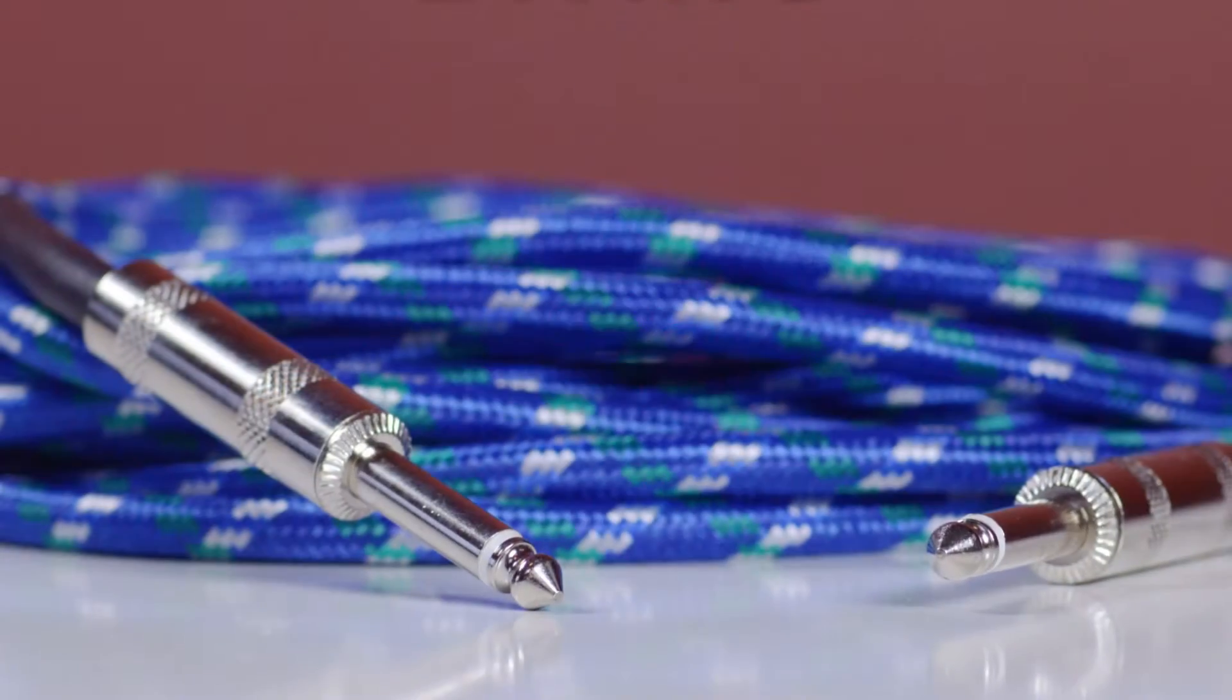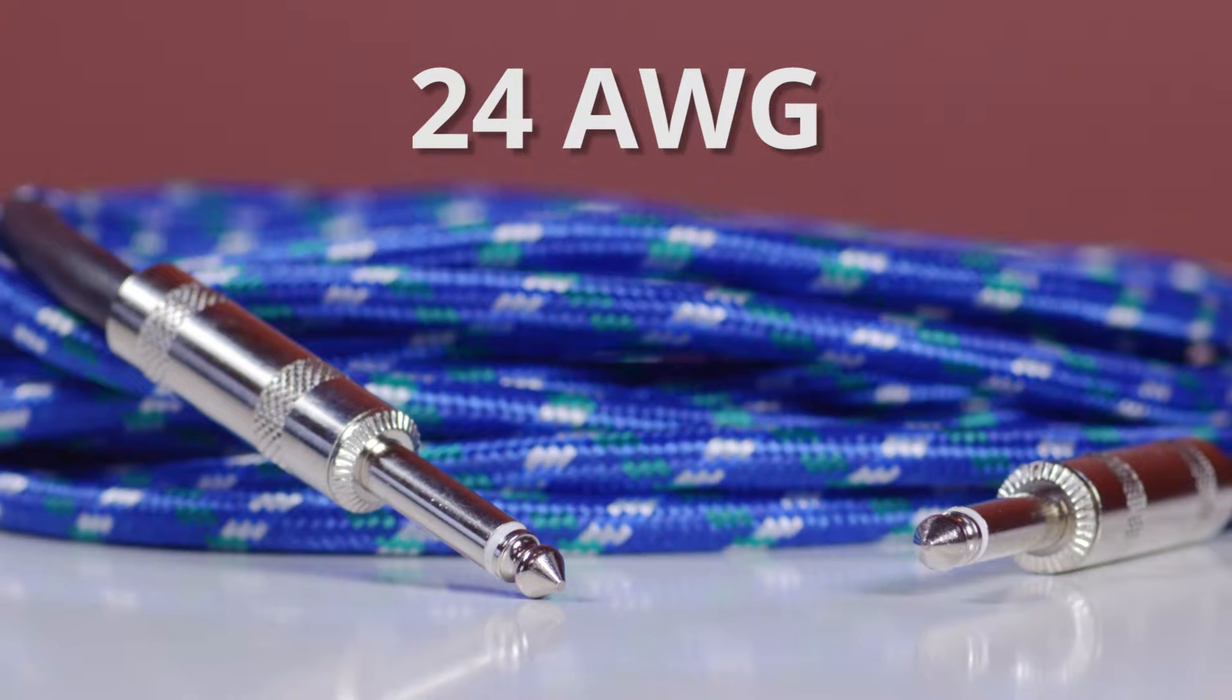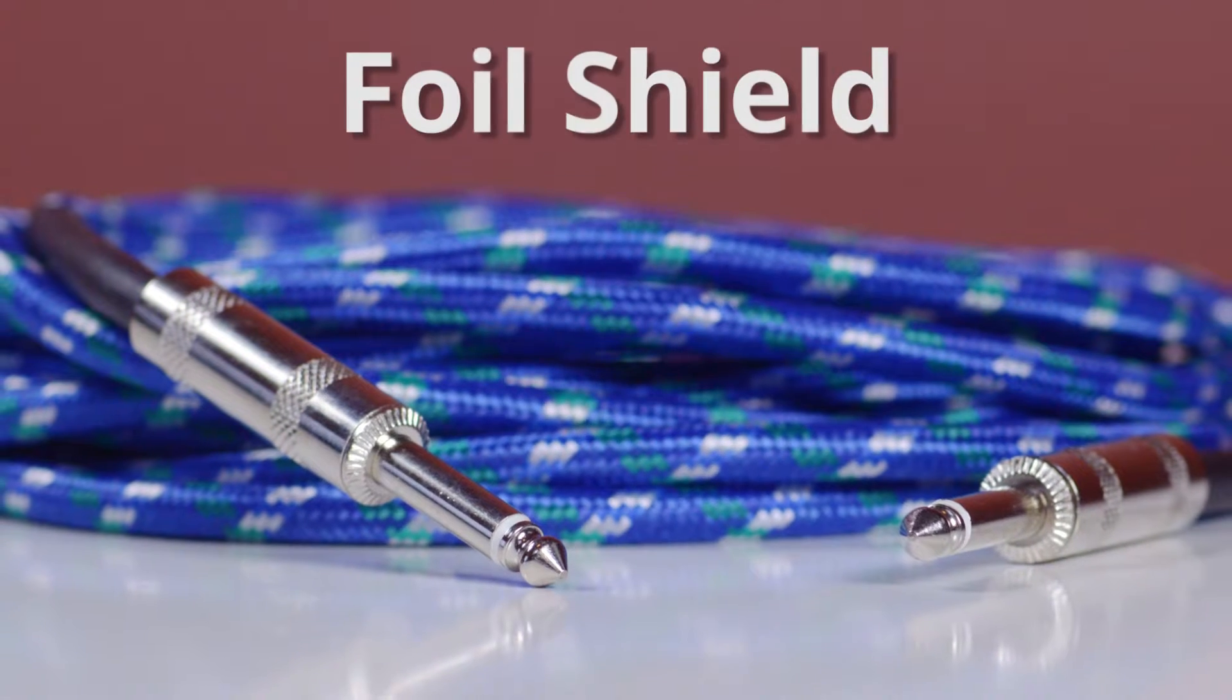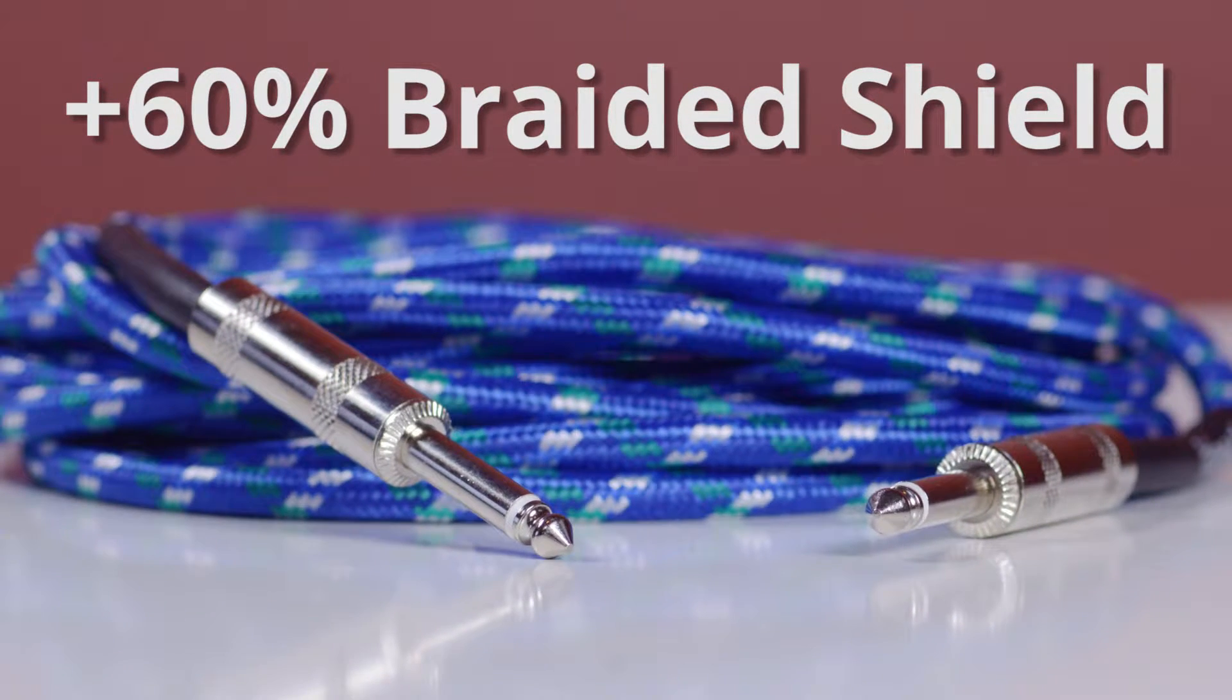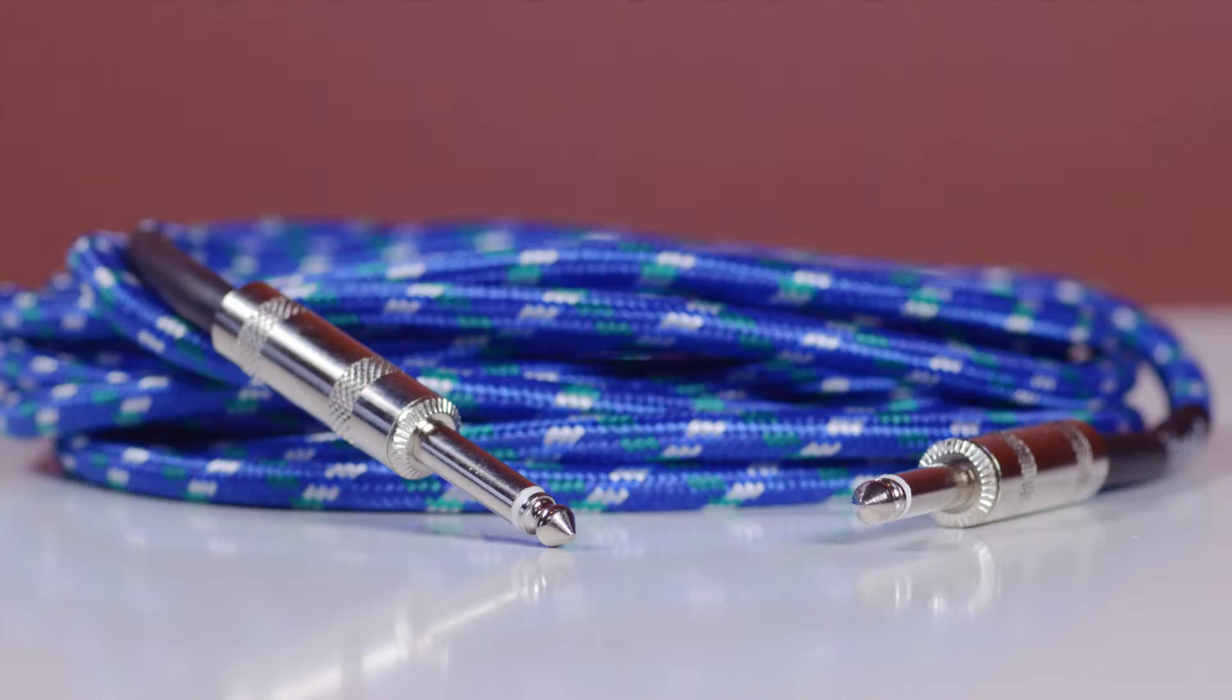The cable is made with 24 gauge twisted pair cable wrapped in an aluminum foil shield and a 60% copper braid for maximum shielding from EMI and RFI interference.